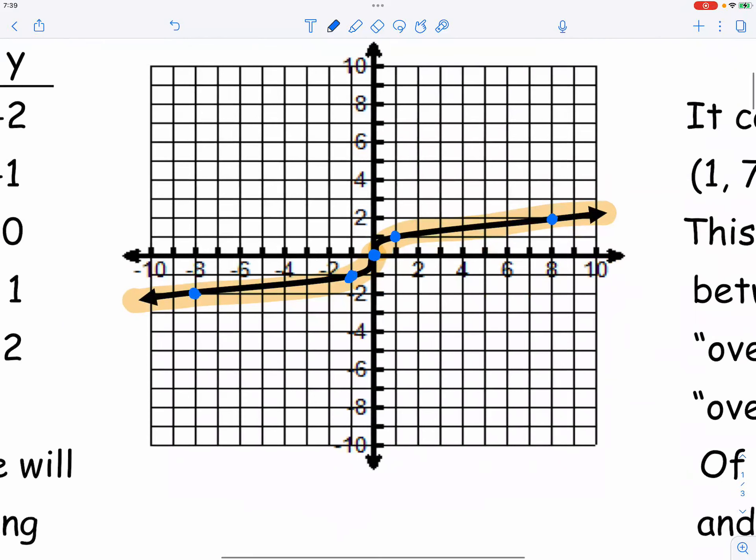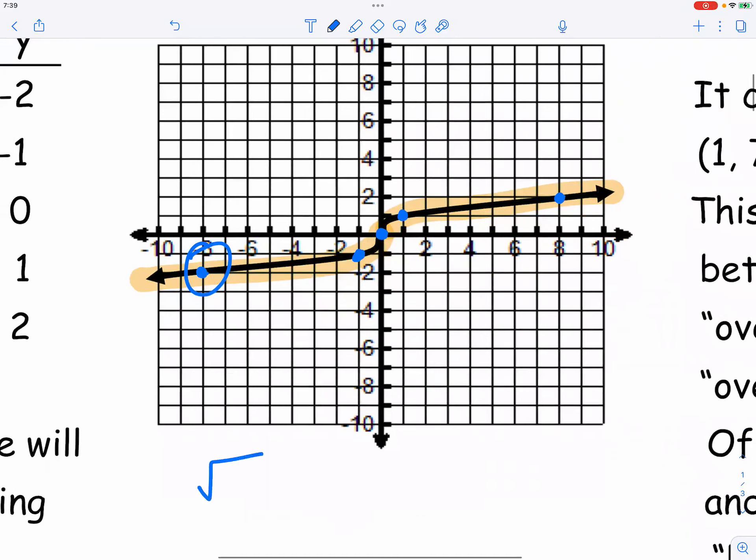For example, we see a point right here, which is negative 8 comma negative 2. Because what is the cube root of negative 8? It's like asking the question, what number multiplies itself three times to get you negative 8?